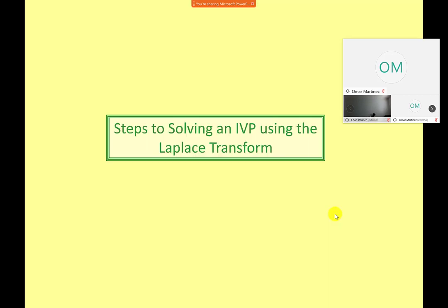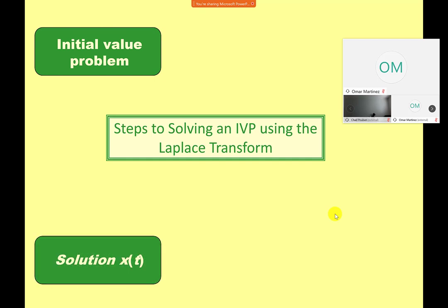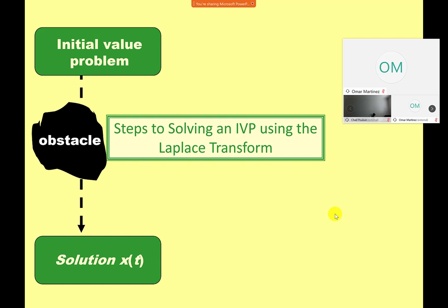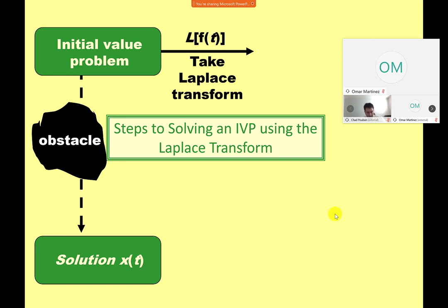This is an illustration of the steps we'll use to solve an initial value problem using a Laplace transform. You start with an initial value problem and there's some solution to it. You're trying to get to the solution with methods we've learned, but there's some obstacle — maybe you're modeling a spring-mass system and you hit it with a hammer, giving it a big jolt at the start, and we didn't have a way to express and solve that.